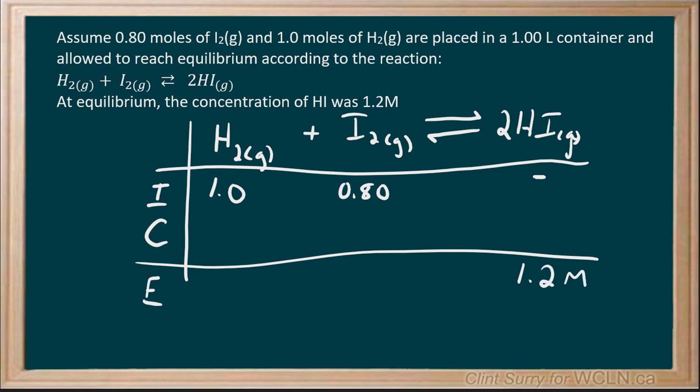This is quite good because we knew at the start we had none. At the end we have some, so there's no choice but for this to have gone up by 1.2 molar. Just as that has gone up, the only place we could have gotten the hydrogen iodide from was hydrogen and iodine reacting together. That means each of those has to go down by a certain amount.